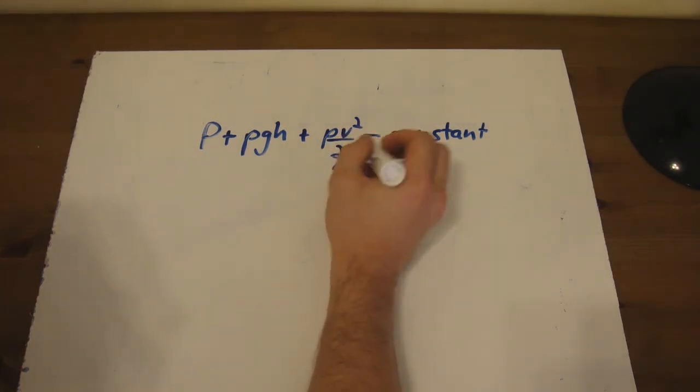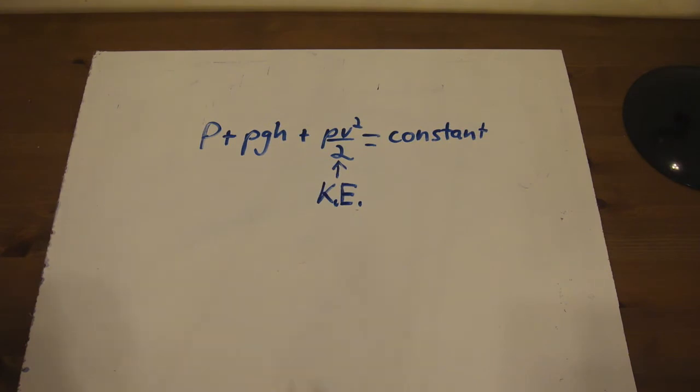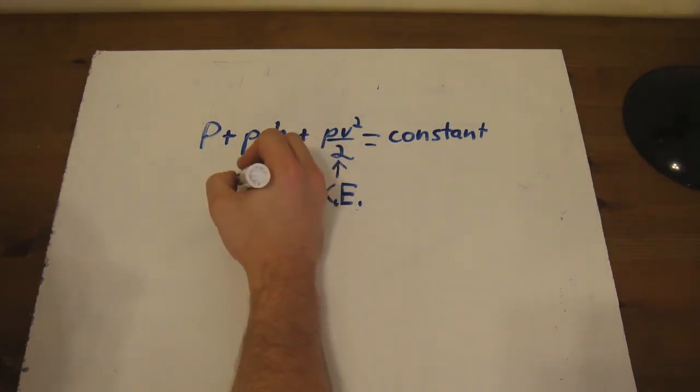So normally when we look at the Bernoulli equation, we consider this component the kinetic energy component of Bernoulli. The next one is going to be rho GH. That's really similar to MGH. So we're going to consider that the potential energy component.